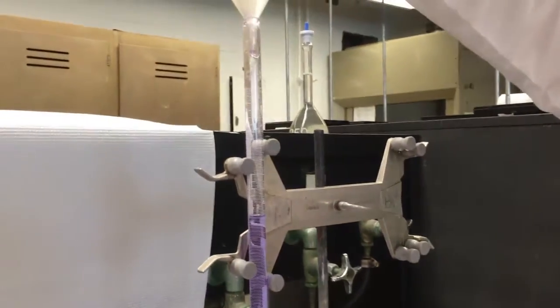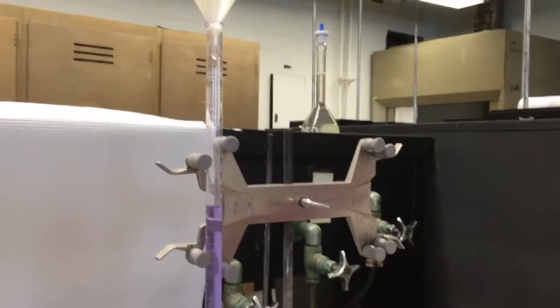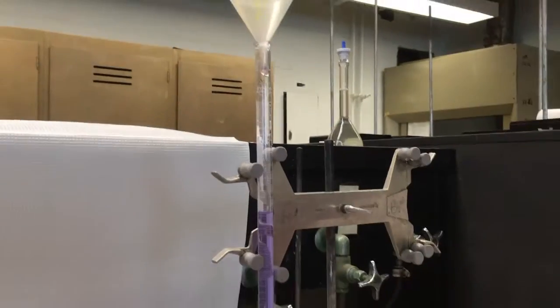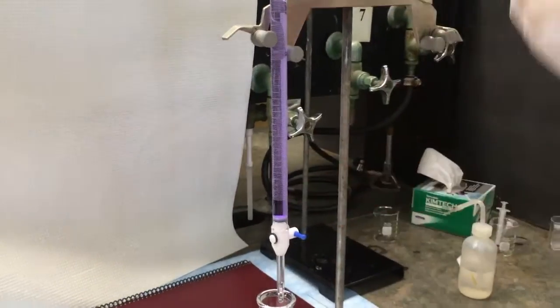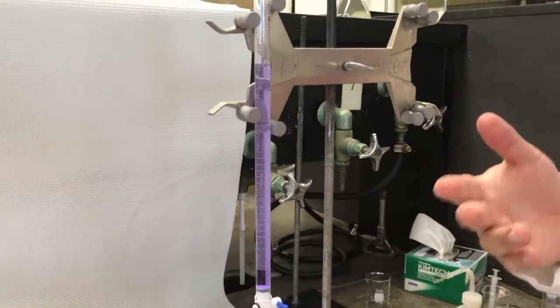Alright, now a lot of students always feel they have to load the solution all the way to the very top, to the 0.00 line. You don't have to do that. Anywhere that you can read it is fine. You have to have the liquid level below the zero there and above the bottom line here at 25. If it's outside that range, you can't measure the volume in delivering. Otherwise, you can use it at any level you want.